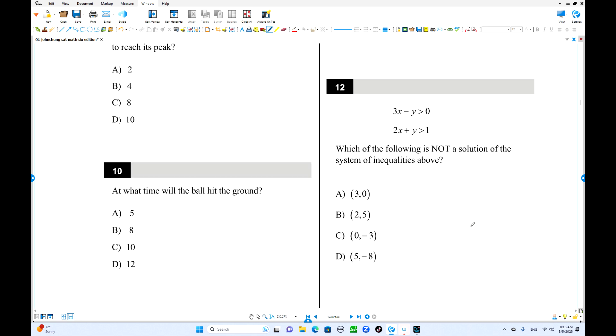Number 12, which of the following is not a solution? The best way is you don't have to graph this inequality, just try to check all these options. Put these numbers quickly. X equals 3, y equals 0. The first one is 9 minus 0 is greater than 0, that's true. Second one is 2 times 3 is 6, plus 0 greater than 0, yeah that's the solution.